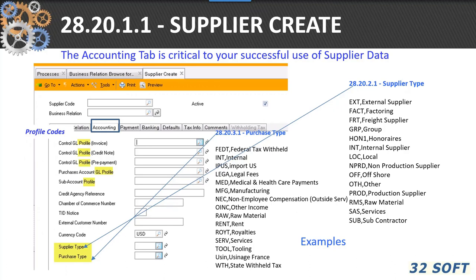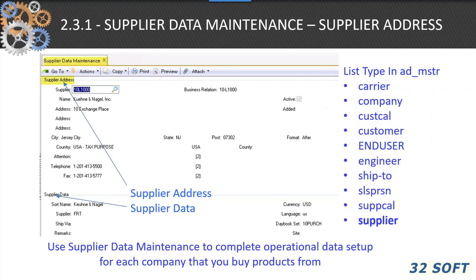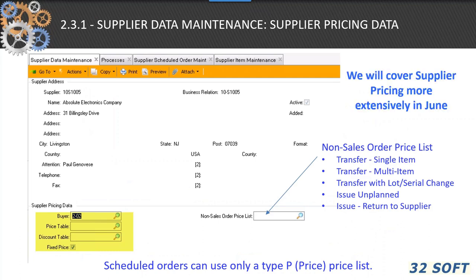The accounting tab is probably the most critical, at least in my mind, as regards the supplier create. This contains your profile codes, which identify relationships between records and shared sets of different types. There are Chamber of Commerce codes, Tax ID codes, and then the two I find most beneficial are the purchase type and supplier type. These codes allow you to do some very effective analysis of data with regard to your suppliers. Once you've created the supplier in 28.20.1.1, you need to go back into 2.3.1, which is the old SE definition of suppliers, in order to have the operational side of QAD recognize your supplier. You enter the supplier, create supplier data, and there's a pricing page which we'll cover more extensively in our June webinar.